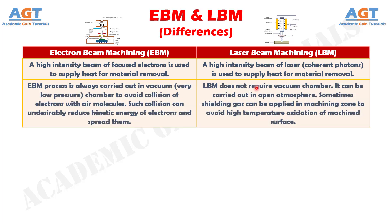Difference number 2: The electron beam machining process is always carried out in a vacuum, very low pressure, chamber to avoid collision of electrons with air molecules. Such collision can undesirably reduce the kinetic energy of electrons and spread them, whereas laser beam machining does not require a vacuum chamber and can be carried out in open atmosphere. Sometimes shielding gas can be applied in the machining zone to avoid high temperature oxidation of the machined surface.